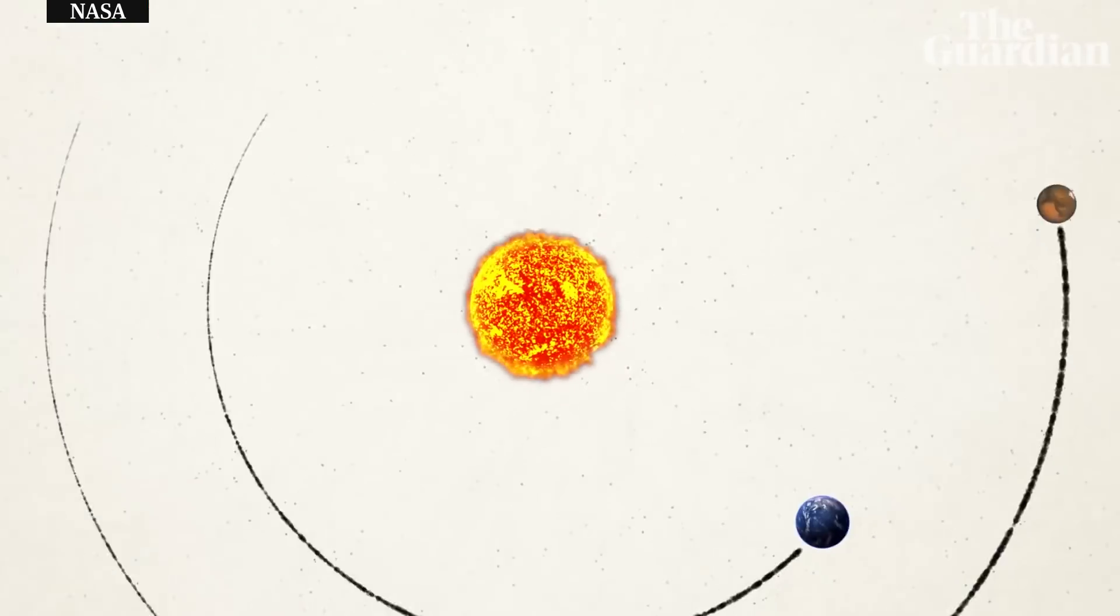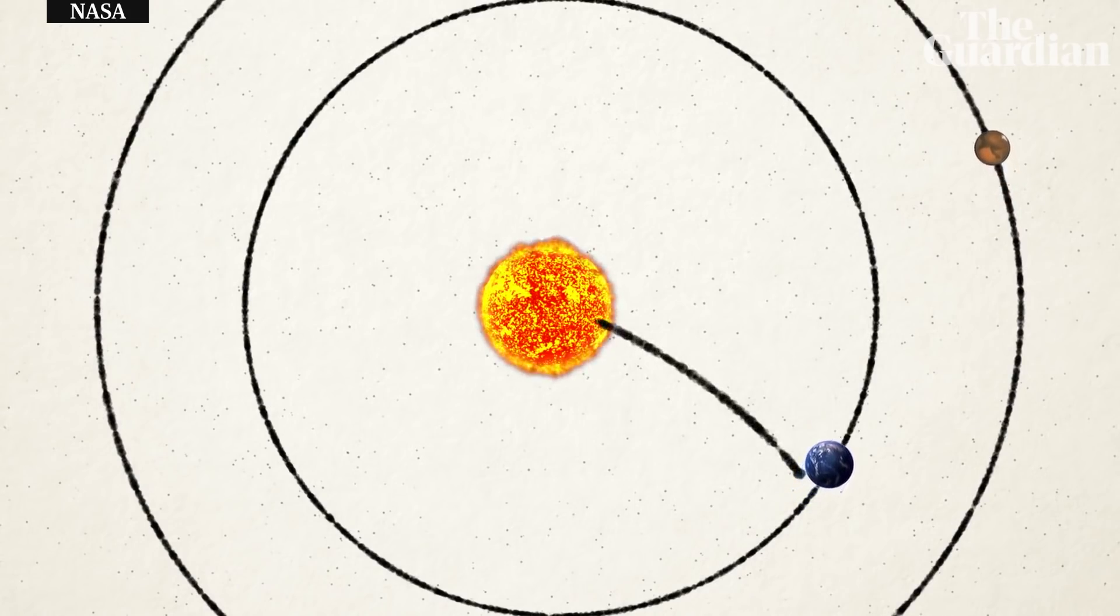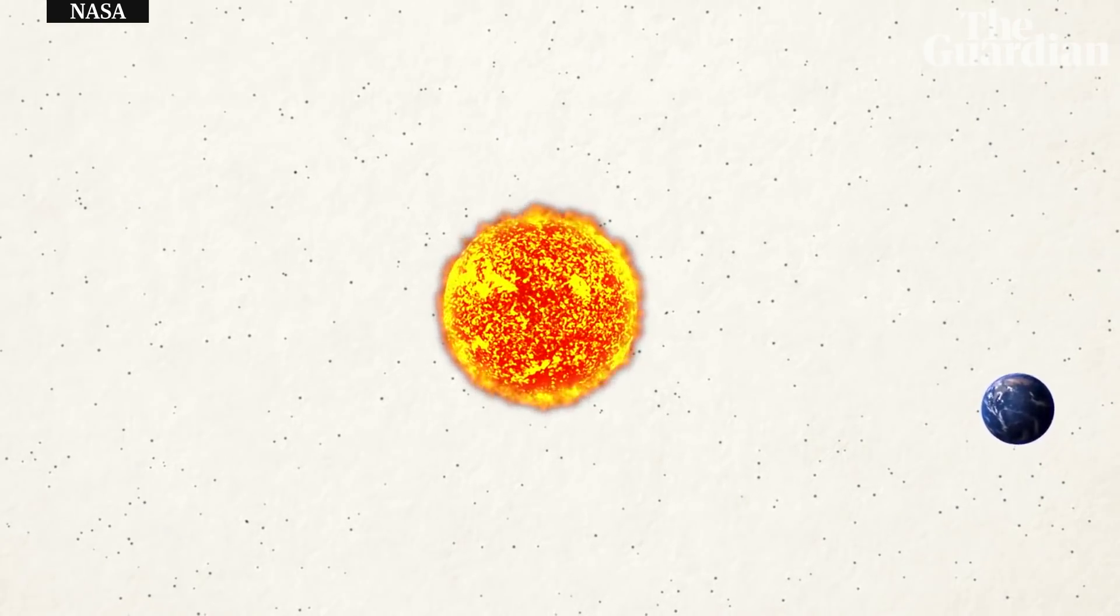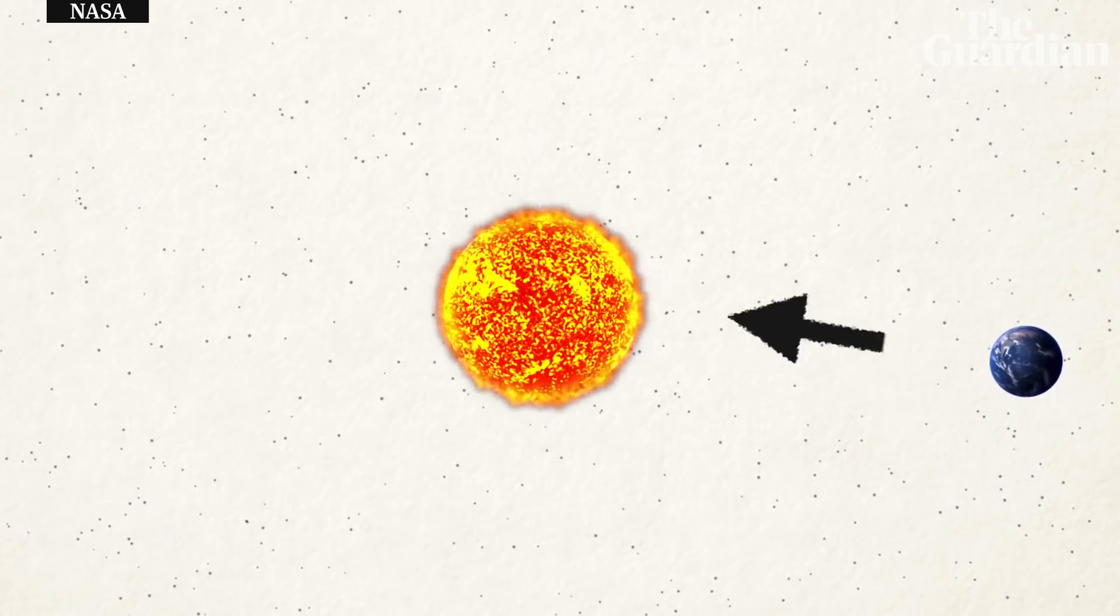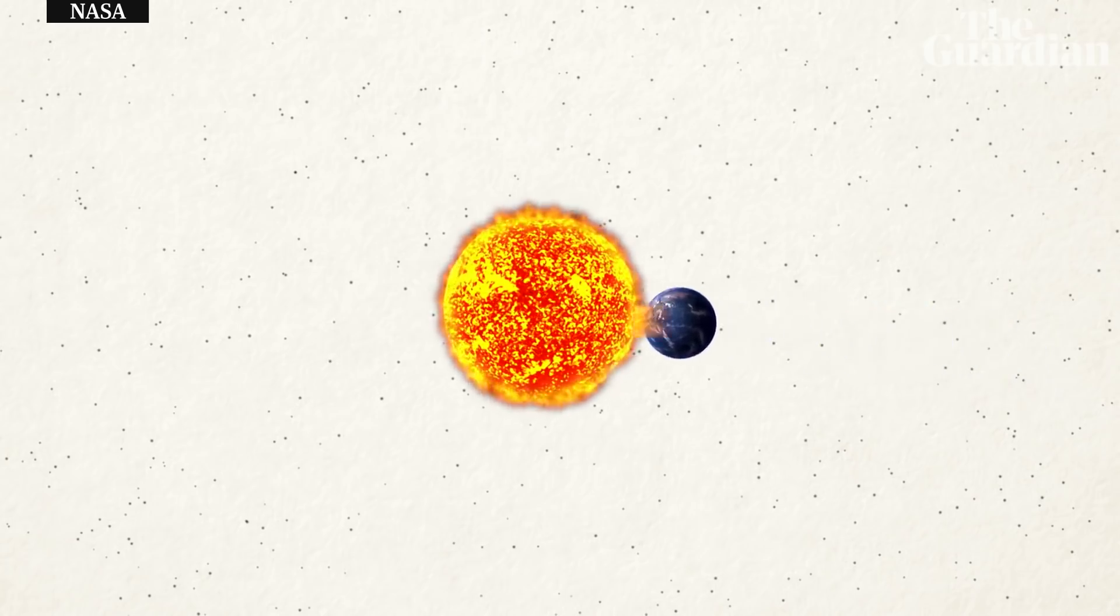It takes 55 times more energy to go to the Sun than it does to go to Mars. Why is it so hard to get to the Sun? The answer is related to why Earth doesn't just fall straight into the Sun, despite the strong gravitational attraction.